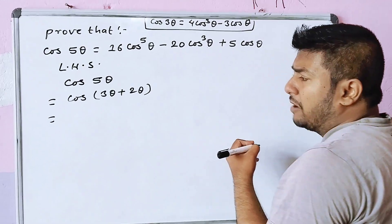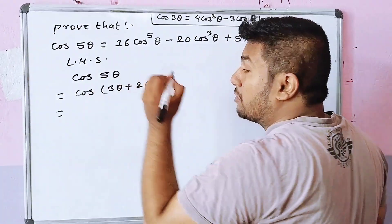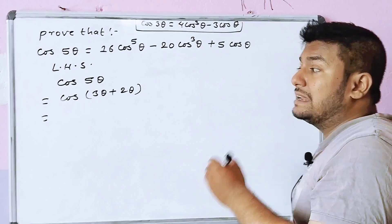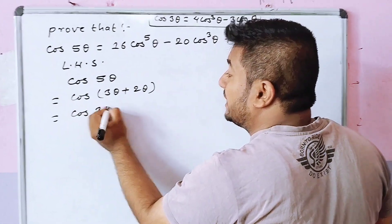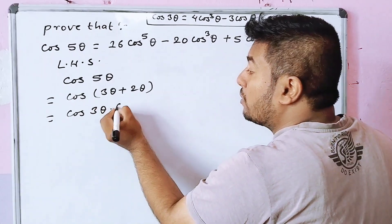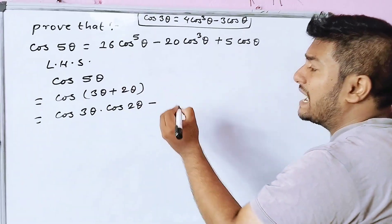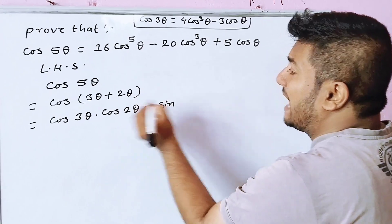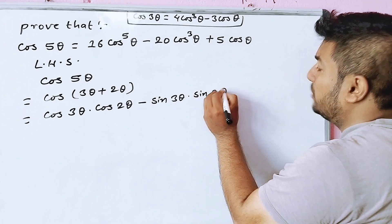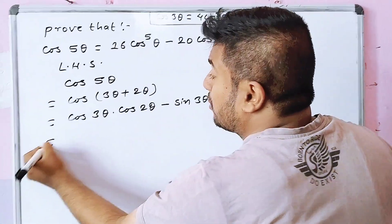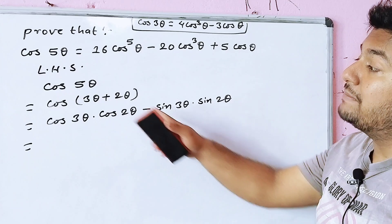Cos(A + B) equals cos A cos B minus sin A sin B. So cos A equals cos 3 theta, cos B equals cos 2 theta, sin A equals sin 3 theta, sin B equals sin 2 theta. This gives us the cos A times cos B minus sin A times sin B form.